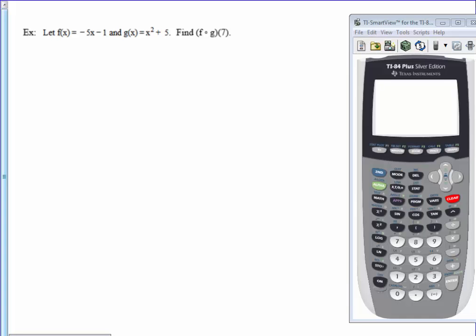In this example, we are asked to perform a composition of functions and then evaluate it at a given number. The first thing I will do is find f composed of g at just x instead of at 7. So basically, find your general formula first, and then after you find your general formula, substitute in the value that's given.